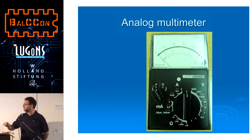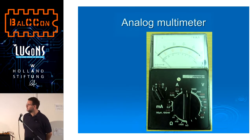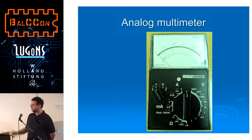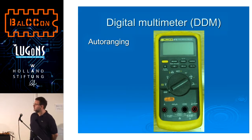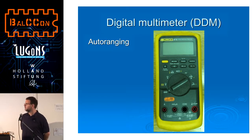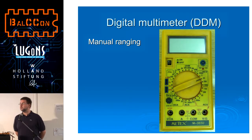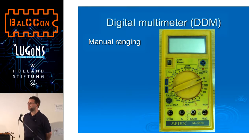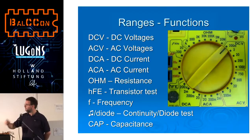There are three types of multimeters today: old analogs with scales, digital manual ranging, and digital auto ranging. This is a typical analog multimeter — you have a scale and a needle that shows the value when you measure. This is a typical modern auto ranging multimeter. And this is what we're going to focus on today: manual ranging.